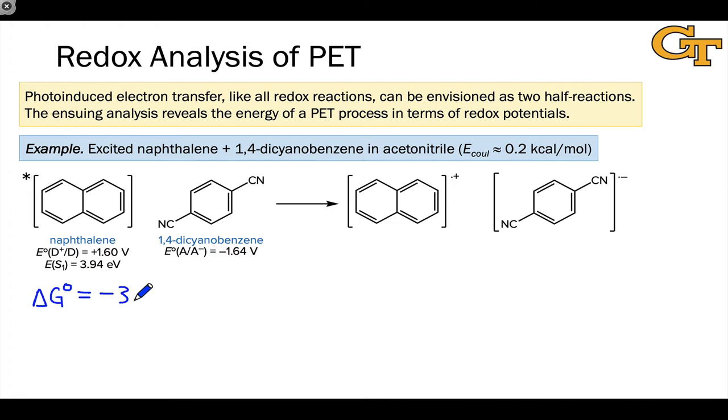What else happens here? Well, 1,4-dicyanobenzene is reduced to the dicyanobenzene radical anion, and the reduction potential associated with that process is negative 1.64 volts. Now to go from the reduction potential to the energy, we need to multiply by the charge involved, which is the charge of an electron since one electron is transferred.